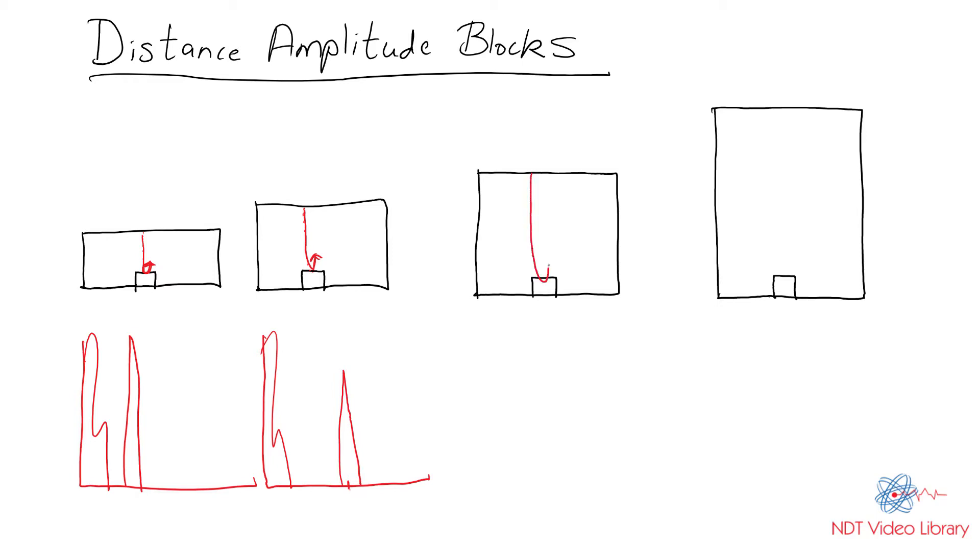Now take the third block. This time the sound has to travel even more distance. It's going to be further away and even shorter in amplitude. And finally, the fourth block, the sound has to travel the most distance. So it's going to be the furthest away and the shortest height.